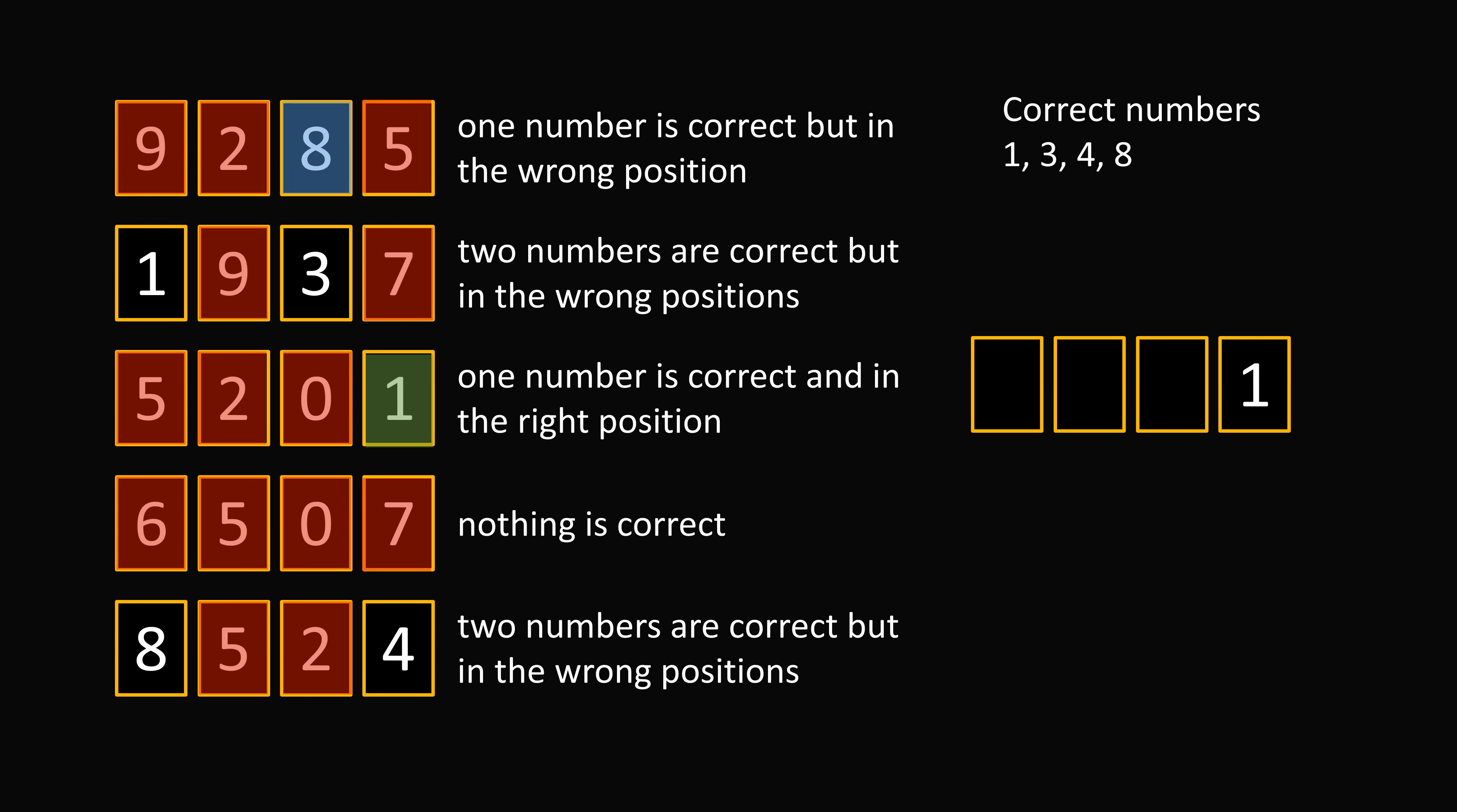From clue 1, we know that 8 is not in the third position, and from the last clue, we know that 8 is not in the first position. So that means 8 must be in the second position. Now from the second clue, we know that 3 is not in the third position. The spots for 2 and 4 are already taken up, so 3 must be in the first position. And that means the number 4 is in the third position. So the correct code is 3, 8, 4, and 1. What an interesting puzzle!